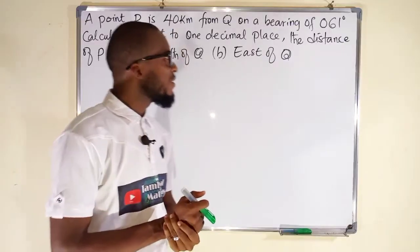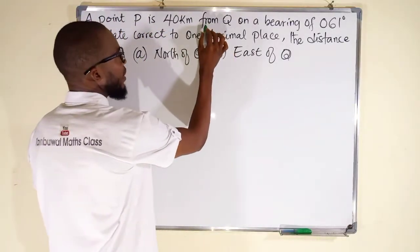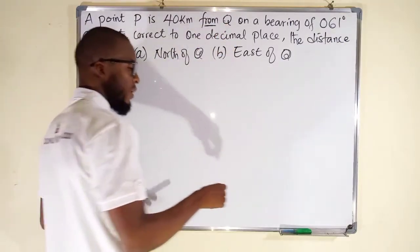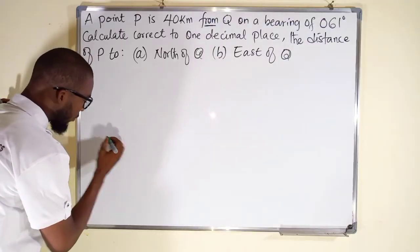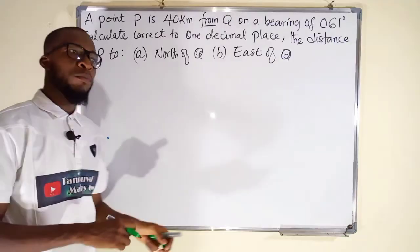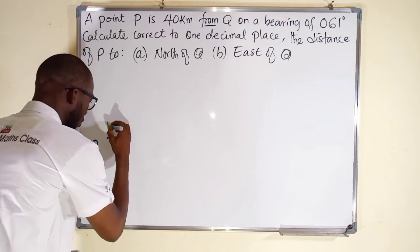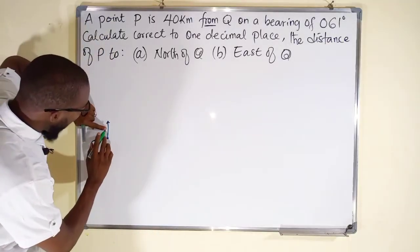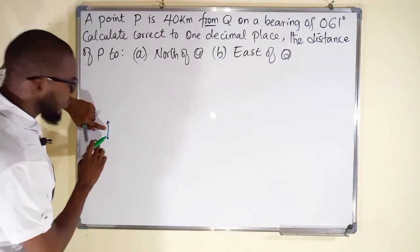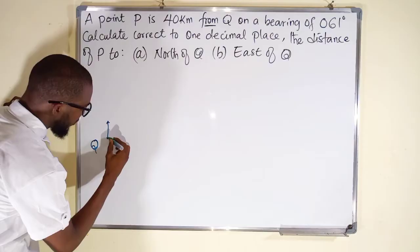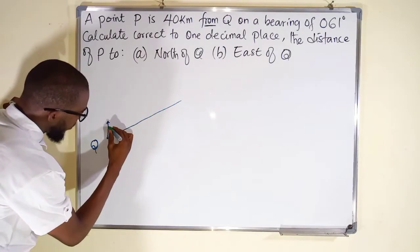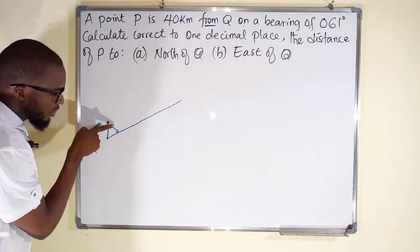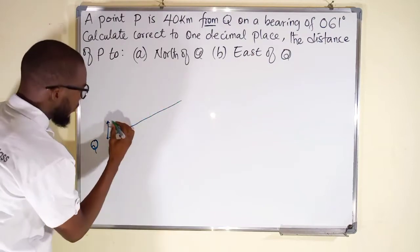From the question, we only have a single bearing, which is 061 degrees. And where are we going to construct that 061 degrees? This word 'from' would always determine the point. It is going to be constructed from Q. So let's assume this is our point, point Q. Every point has a north pole. So this is the north pole of this Q, because every angle must be calculated from the north. So we are going to construct angle 061 degrees from this north of Q.